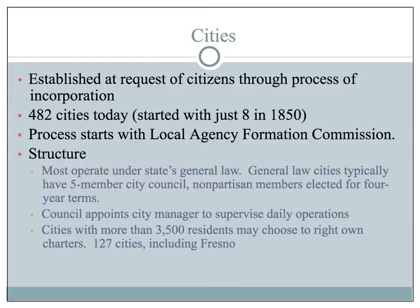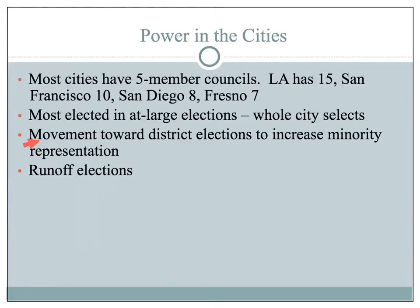Most cities have five-member councils, although Fresno has seven. Most council members are elected in at-large elections, meaning the entire city votes for the council candidates — that is the case in Clovis. In Fresno, there are district elections, meaning voters in a particular district are able to select their council member. For instance, voters in southwest Fresno elect their council representative, voters in southeast Fresno elect theirs, and so on. The district elections lend themselves to increasing minority representation on councils.